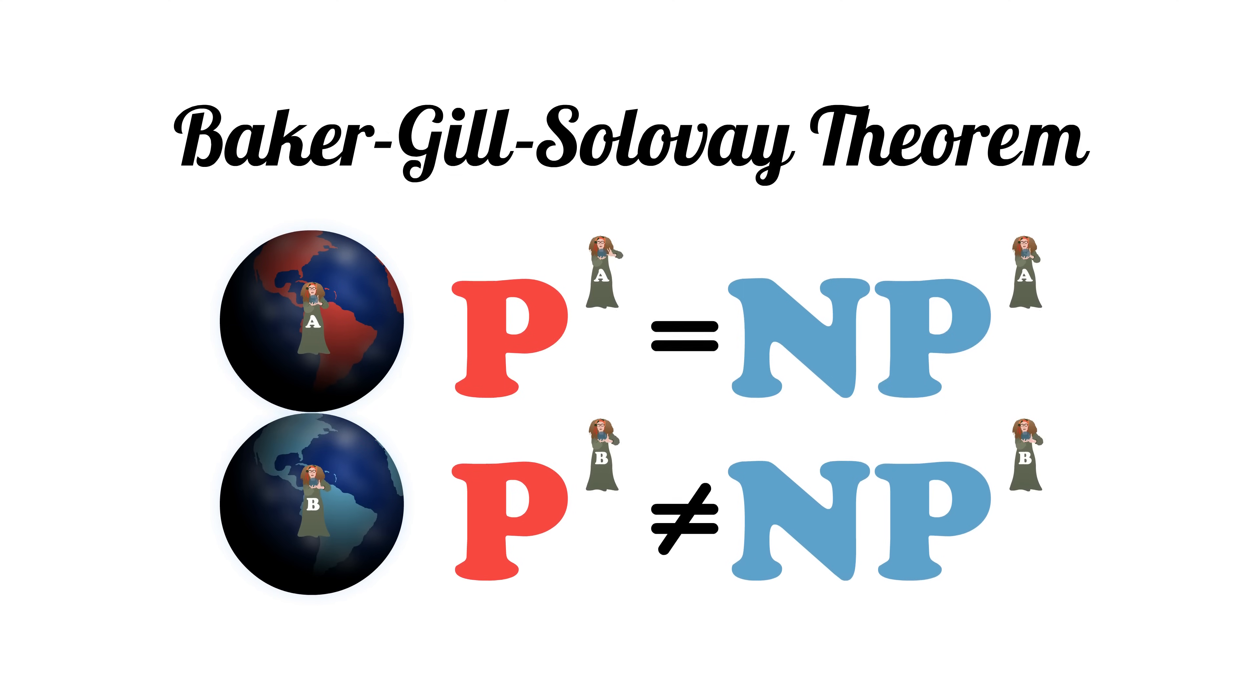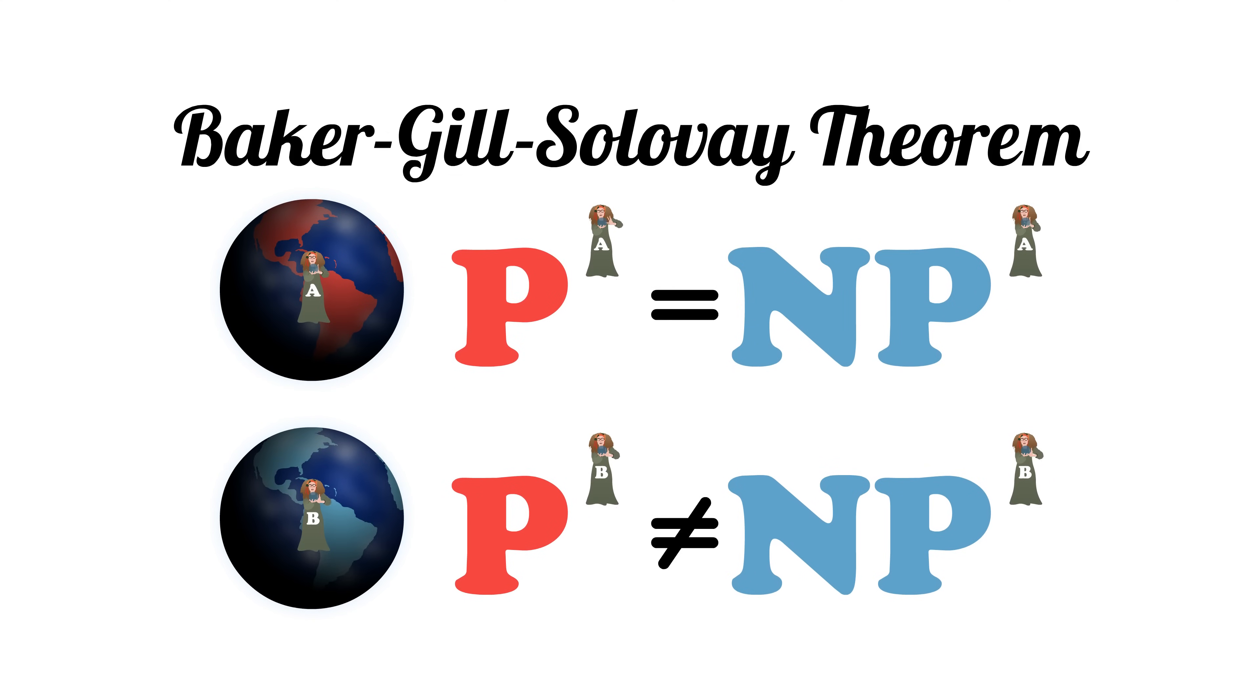They then show that there is another oracle B that we can add which does the opposite. P with B and NP with B are not the same, so in the universe with oracle B, P does not equal NP.